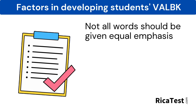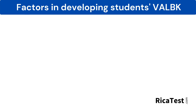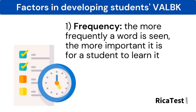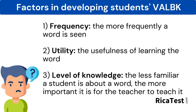The RECA test will ask you to demonstrate that not all words should be given equal emphasis in teaching. The factors for selecting appropriate vocabulary for students include: first and most importantly, frequency — the amount the word is seen; the more it's seen, the more important it is for the student to learn it. The second factor is utility — the usefulness of learning the word; the more utility the student will gain, the more important it is to teach. Third is level of knowledge — the less familiar a student is with a word, the more important it is for the teacher to teach it.